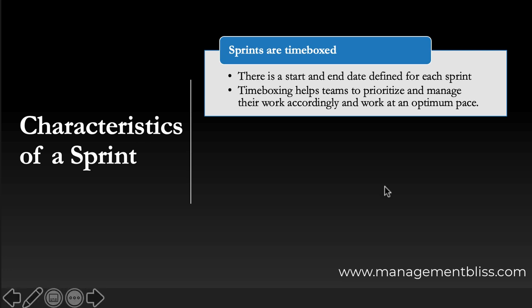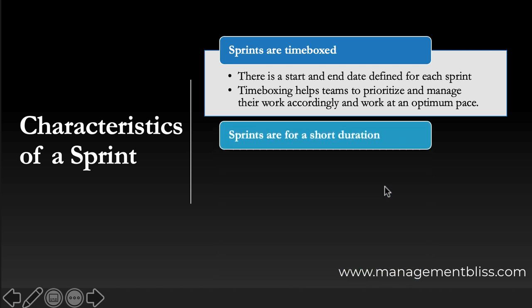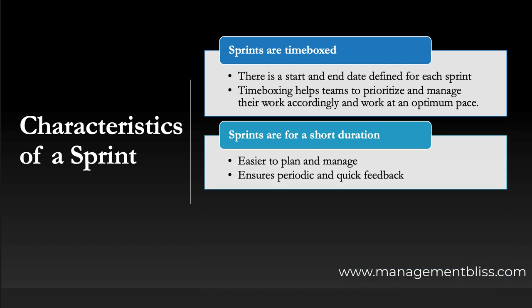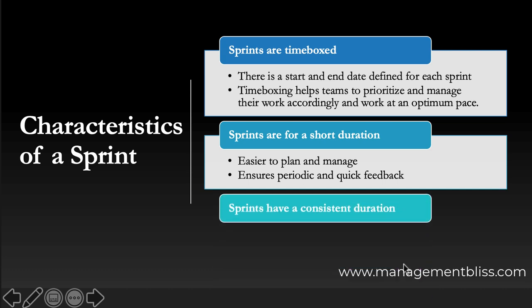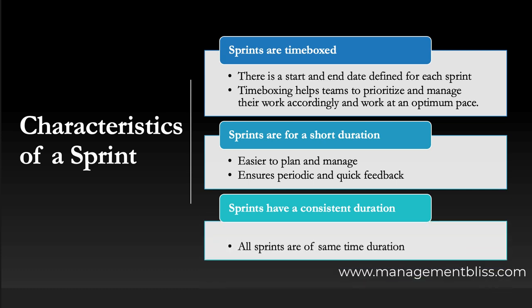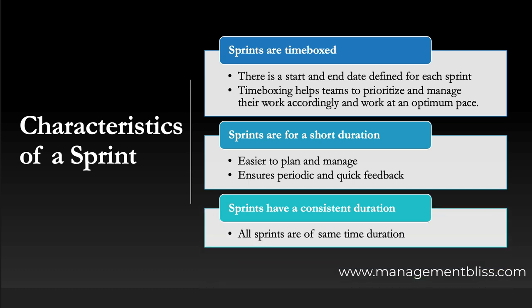The second characteristic is that sprints are for short duration. Duration of sprints should be only for a few weeks and not months, as it becomes easier to plan and manage. Shorter time duration also ensures periodic and quick feedback. The next characteristic is that sprints should have a consistent duration. If the team decides on a two-week sprint, then all sprints in the product development life cycle should only be for two weeks. This rule should always be followed unless there is a solid reason to break it.